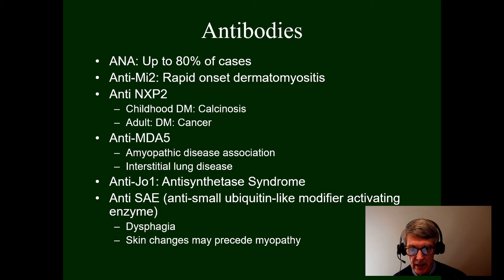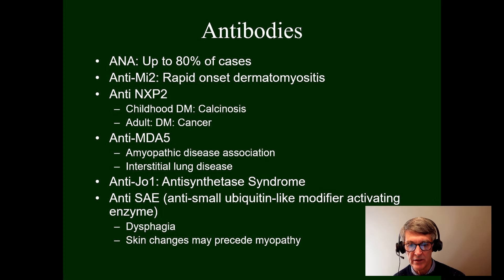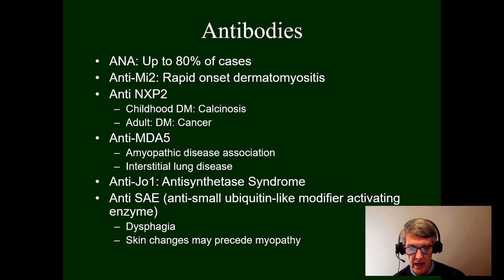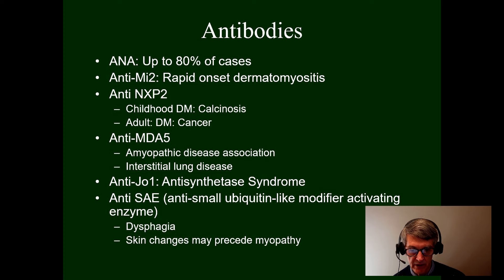The MDA5 antibody tends more often to be associated with amyopathic disease — the skin condition of dermatomyositis without inflammatory muscle disease — though there is increased risk of interstitial lung disease if this antibody is present. Anti-JO1 is associated with anti-synthetase syndrome, which is a combination of myositis and lung disease, along with mechanic's hands. The anti-SAE antibody is associated with increased risk of dysphagia, and skin changes may precede the myopathy in this condition.